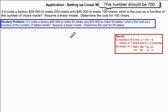This clip reviews applications of linear models. The problem asks, if it costs a factory $30,000 to make 200 chairs and $45,000 to make 100 chairs, what is the cost as a function of the number of chairs made? Assume a linear model. Then determine the cost for 100 chairs. The problem in the blue box is for you to complete once we've gone through a solution for this given problem.